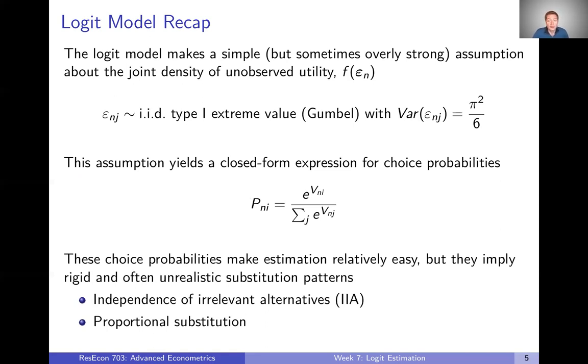So the first model that we talked about building off of this discrete choice and random utility framework is the logit model, and the logit model made a simple and sometimes maybe often overly strong assumption about that joint density that I just described. In the logit model we assume that every one of those epsilons is IID type one extreme value with variance equal to pi squared divided by six. And I just want to highlight really the key piece of this is that they are IID.